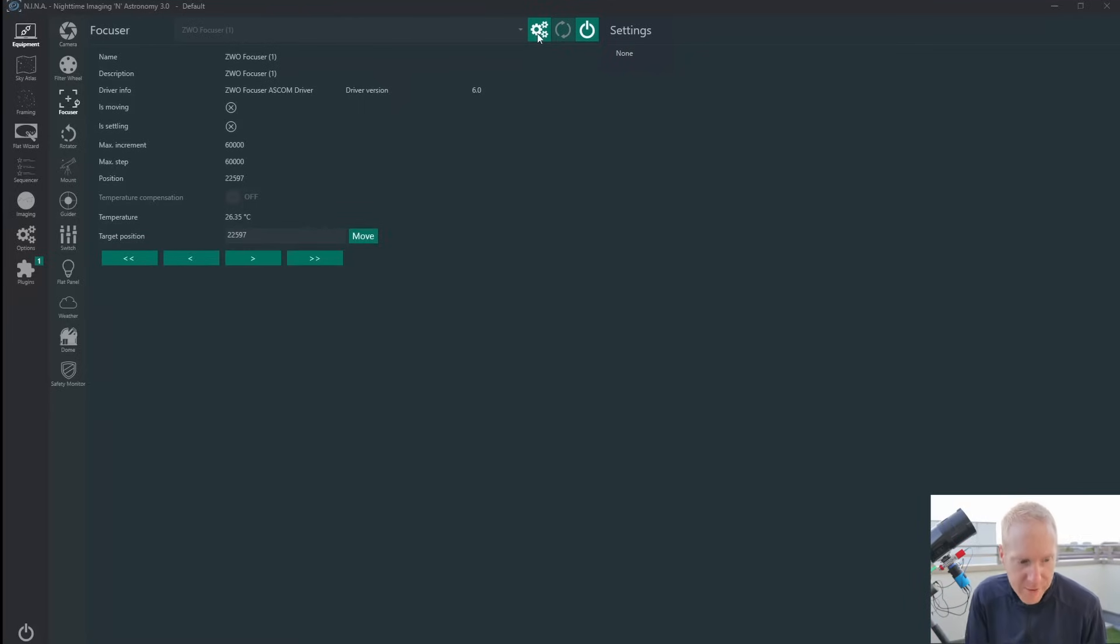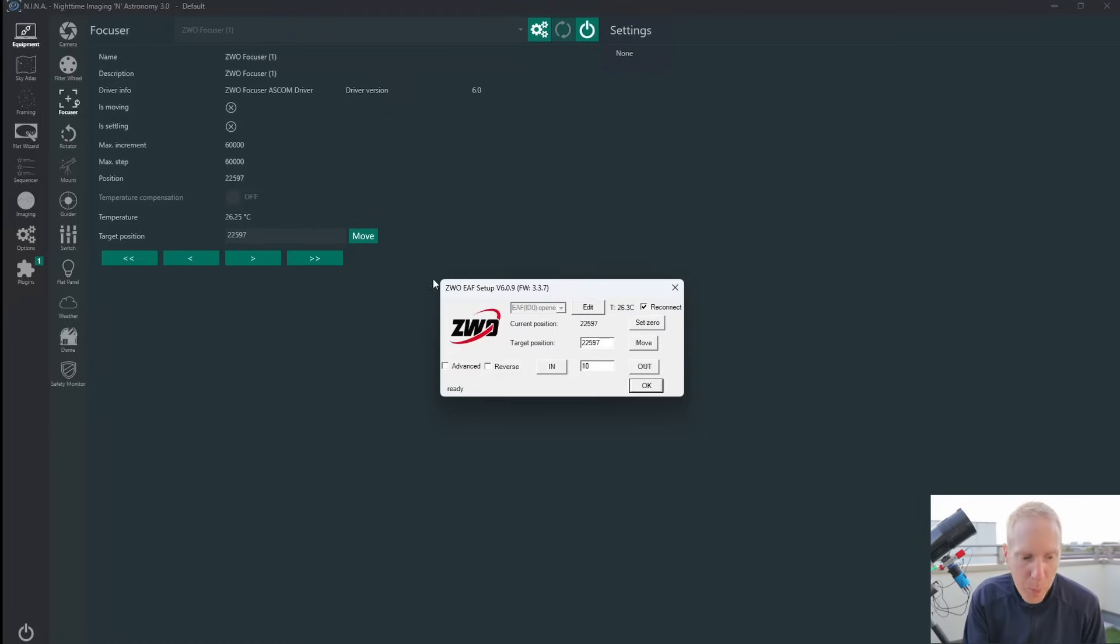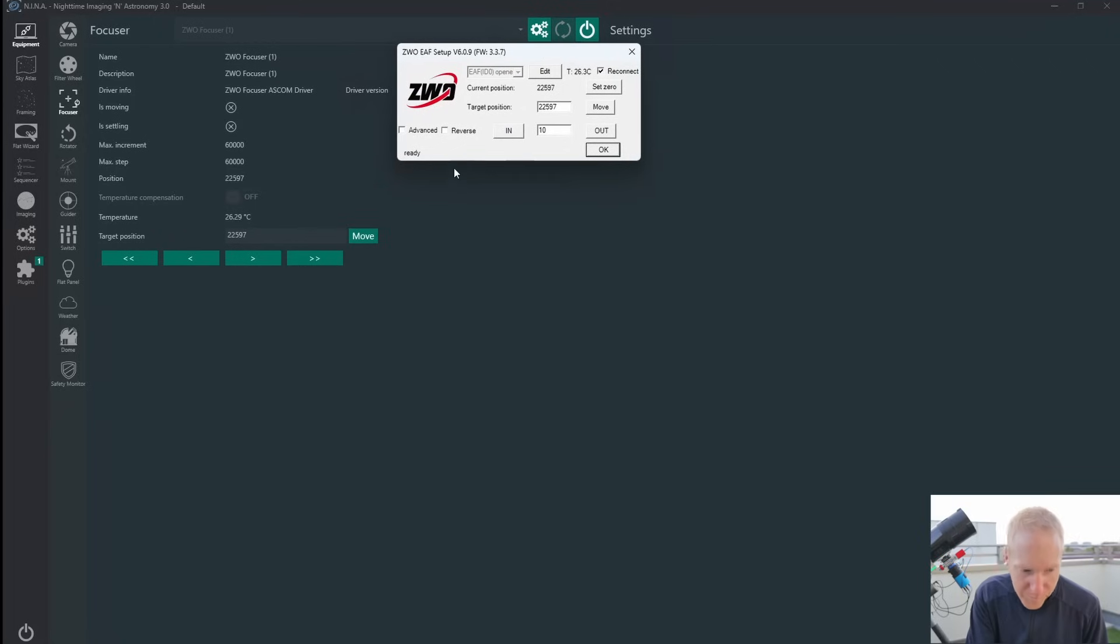You will click on the settings icon here that will open up the ASCOM driver. If you are in SharpCap, or if you're using Sequence Generator Pro, or Voyager, or any other software on Windows, you should also have like a settings icon that opens the driver window. And so what you want to do, if you get into this situation, and your brain is foggy like mine, is you go to Advanced here, and you can change the max step.